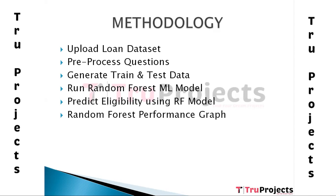In the Generate Train and Test module, we split the data so that 80% is used for training and 20% for testing the machine learning algorithms. The next module is 'Run Random Forest Algorithm Model,' where we build the Random Forest model on the training dataset.